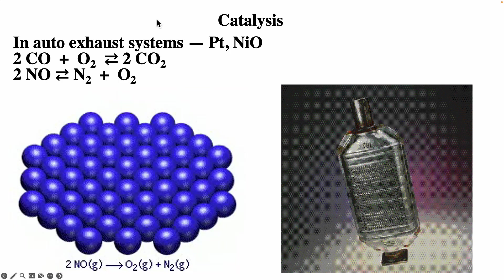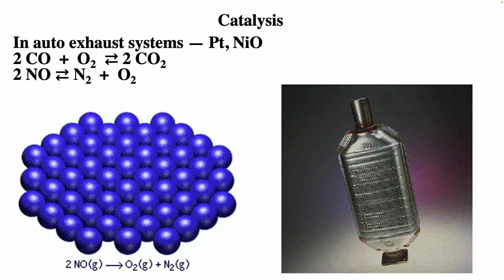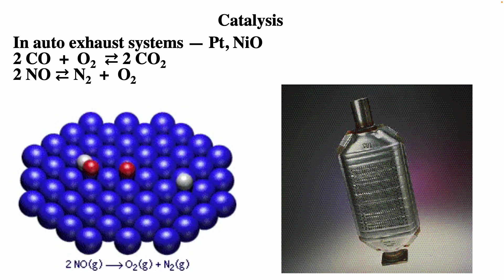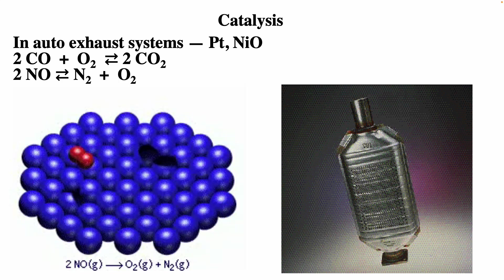The catalytic converter works by providing a place where the reaction occurs, stabilizing the transition state. In a platinum-based catalytic converter, nitrogen monoxide molecules in the exhaust stick to the surface of the platinum. The molecule decomposes, each atom remaining on the surface. When another NO molecule comes to the area, it also decomposes, and its N atom bonds with the other N atom on the platinum surface. The O atoms also combine, and the gaseous nitrogen and oxygen molecules float away from the surface. The catalyst just stabilizes the transition state, reducing the activation energy, speeding up both the forward and reverse reactions.